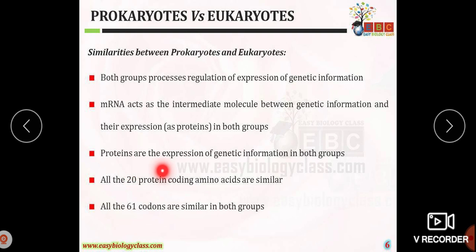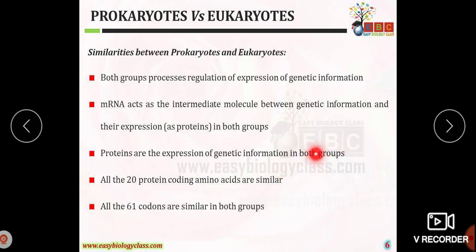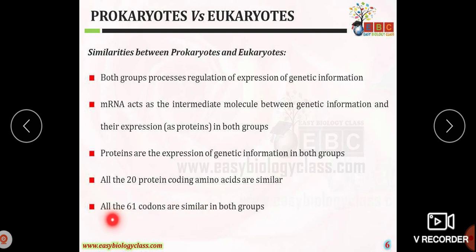Proteins are expressed from the genetic makeup of the cell, and this expression is found in both groups. All 20 protein-coding amino acids are similar in both organisms, and all 61 codons are similar in both organisms.